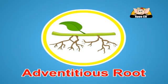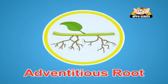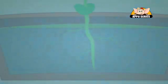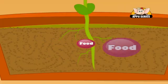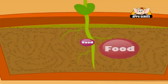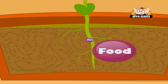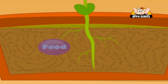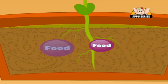Adventitious Roots: These roots develop to help the plant climb — for example, ivies. Roots also store extra food for future use.